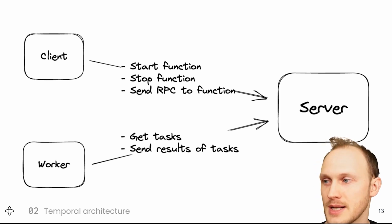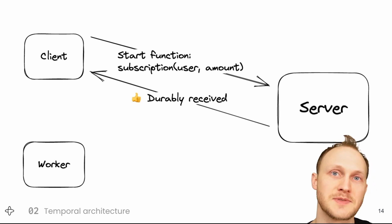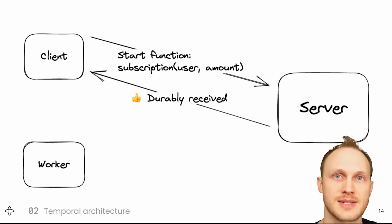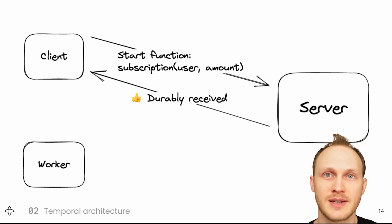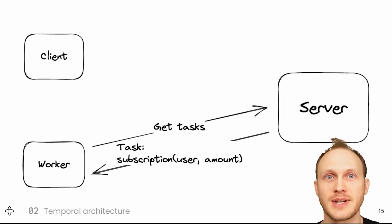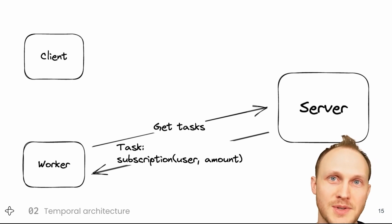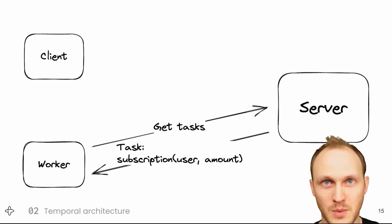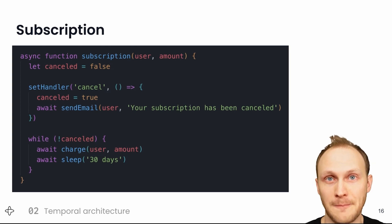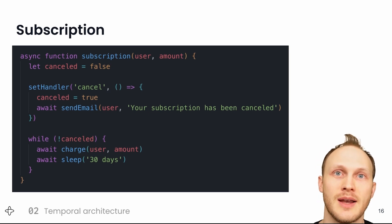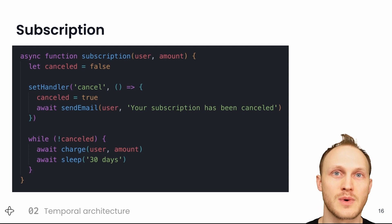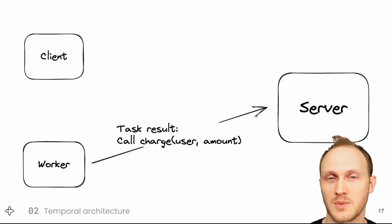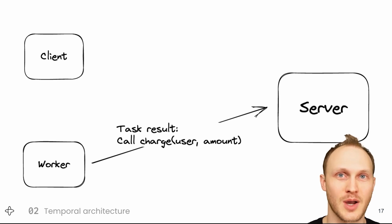Let's look at a couple of concrete examples. We can start the subscription function we saw earlier by using the client to send the server a start function message. The server saves the request in the database and replies that it has received and accepted the request. The server creates a start function task for the worker. The worker polls and receives the task and calls the function, since the worker is the process that has the code. The function initializes a variable, sets up an RPC handler, enters the loop, and then hits the line await charge. That's the result of executing the start function task. At this point, the worker sends that result to the server. The worker is saying: the next step of running the subscription function is calling this charge function.